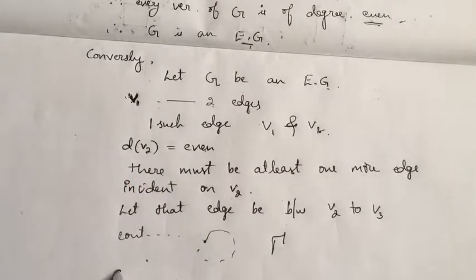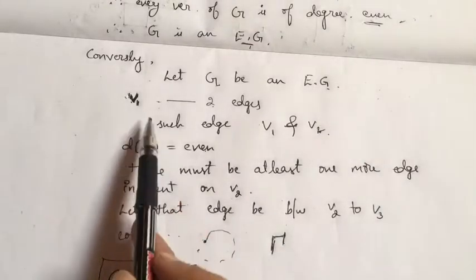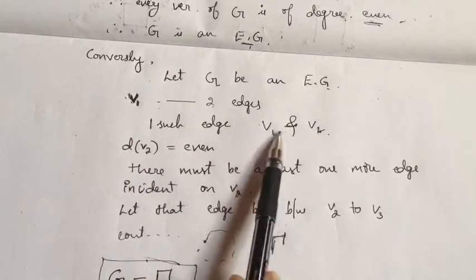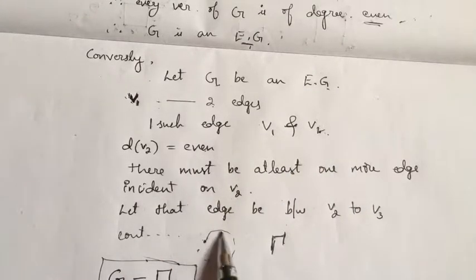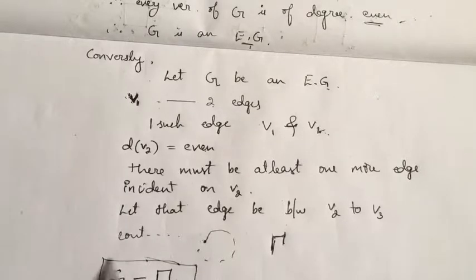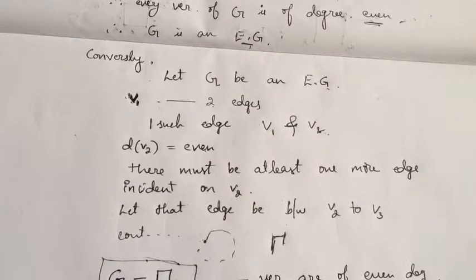Let me call that circuit gamma. Now from graph G I remove this circuit gamma. What remains is my new graph. Even in this new graph, all the vertices are of even degree. So from the remaining graph I remove one more circuit in the same way.